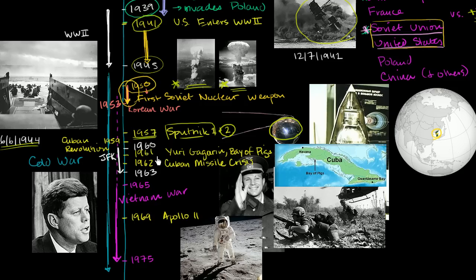That got everyone freaked out, and the US responded. Then in 1961, you have Yuri Gagarin — the first human being in space — who returns safely. The United States eventually gets up there as well, and then fast forward all the way to 1969, the US is the first to land on the Moon. So you have this space race where the two countries are really trying to one-up each other.